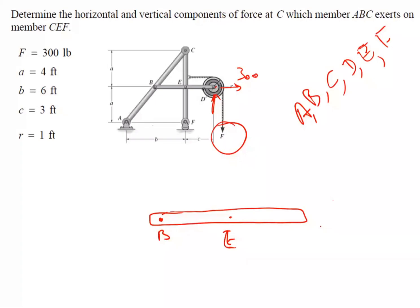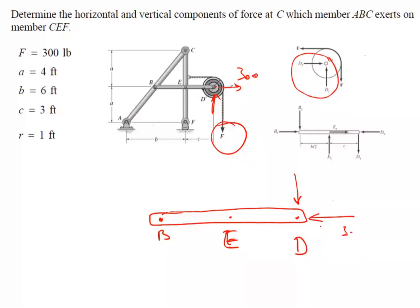At D, I've got the forces. Whatever force I assumed here in the opposite direction, it will be here. So these are 300. At point E I've got a pivot, so I've got two forces. And at point B I've got a pivot, I've got two forces.